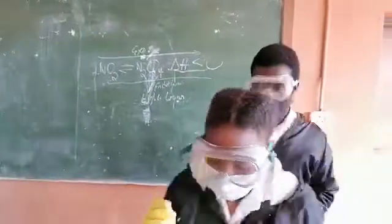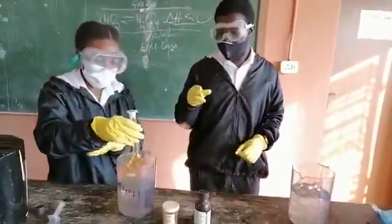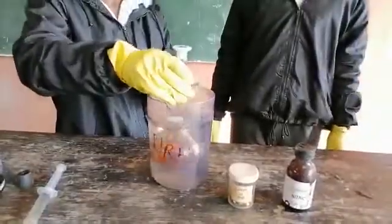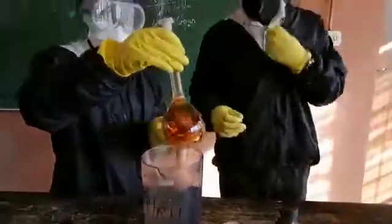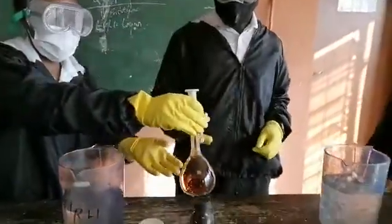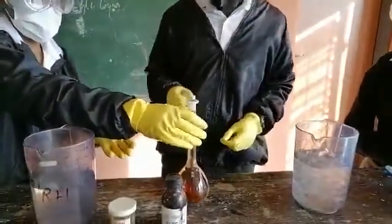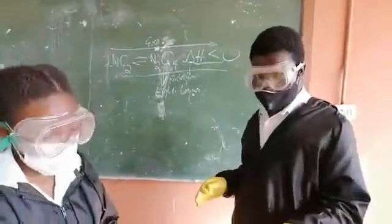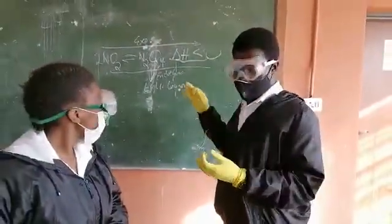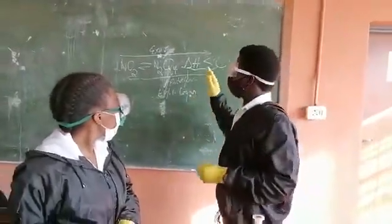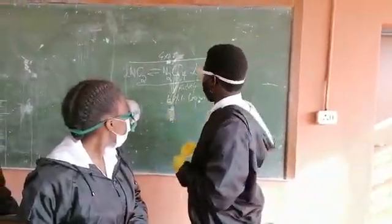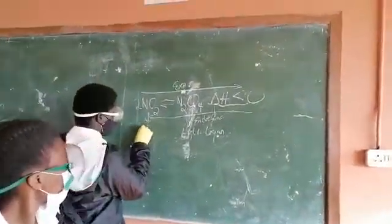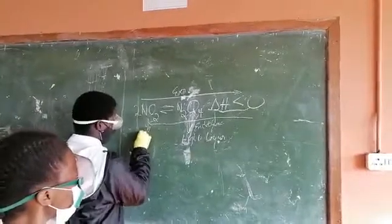Now for our second observation, we are going to be putting the flask in the hot water bath. Now we observe the dark brown color, which means that the endothermic reaction was favored. Since temperature increased, it shifts equilibrium to the left, which means that the reverse reaction was favored. So the concentration of nitrogen dioxide increased, which means that nitrogen dioxide is dark brown.